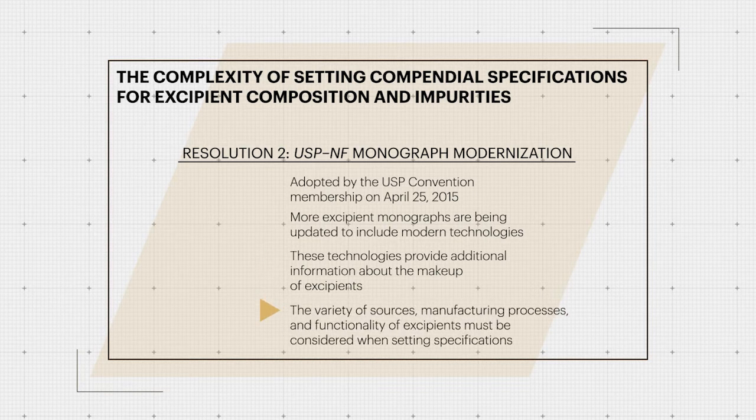The variety of sources, manufacturing processes, and functionality of Excipients must be considered when setting specifications. Currently, there are no general chapters in USP-NF that provide guidance on how to specify Excipient Composition, including control of impurities.